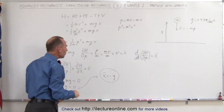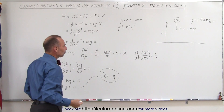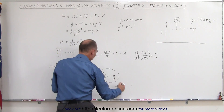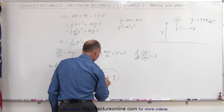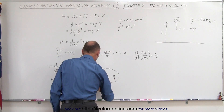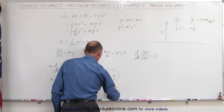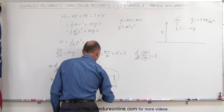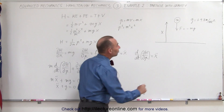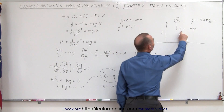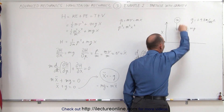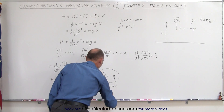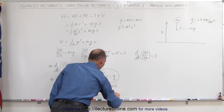Remember that if g is plus 9.8 meters per second squared, minus g is downward. If we now multiply both sides of the equation by m and rearrange, we can say minus mg is equal to m times x double dot, and therefore minus mg equals the force acting on the particle due to gravity in a downward direction, which means that F equals ma.